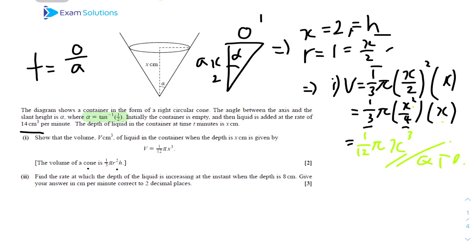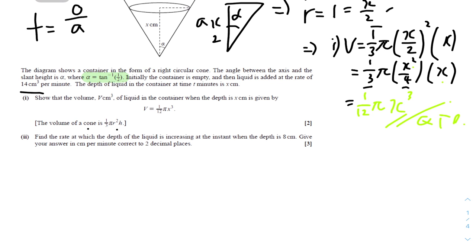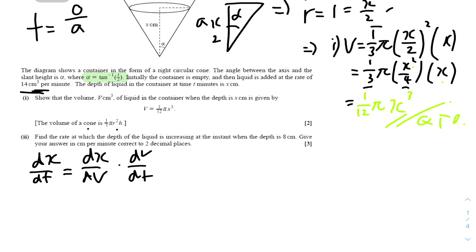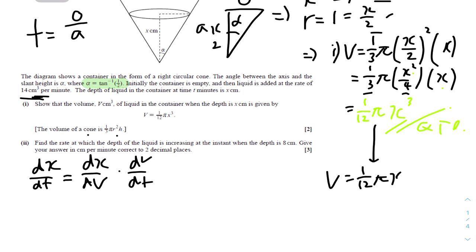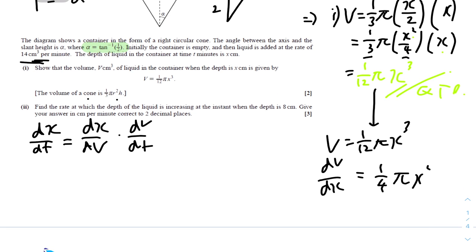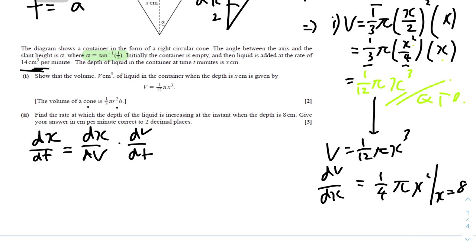For part 2, find the rate of change at which the depth of the liquid is increasing at the instant when the depth is 8 cm, giving your answer in cm per minute correct to 2 decimal places. We have to find dx/dt, which can be calculated as dx/dt = dx/dV × dV/dt. We're already given dV/dt = 14. We have V = (1/12)πx³, so differentiating V with respect to x gives dV/dx = (1/4)πx². At the condition where x = 8: (1/4) × 8² × π = 16π.